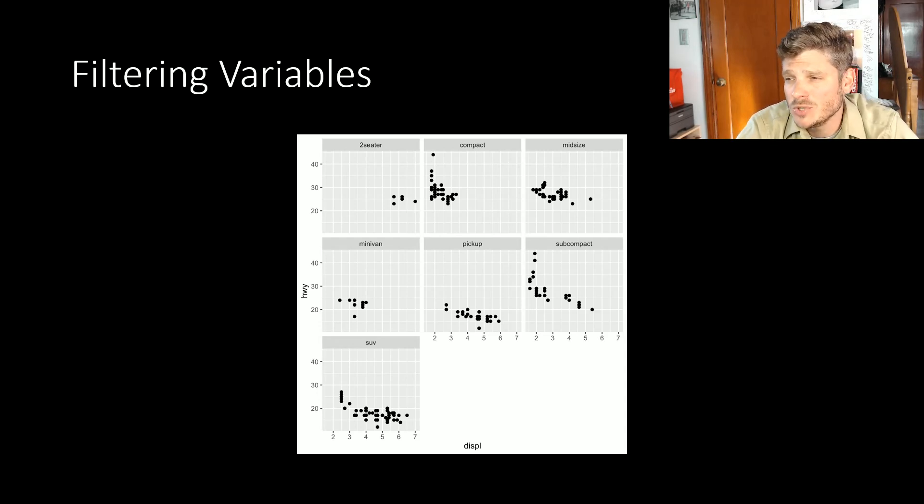When I run my code, now I have a separate graph for two-seater cars, compact cars, midsize cars, minivans, pickups, subcompact, and SUVs. Each one of these plots has that same x and y-axis. The y-axis is the highway miles per gallon—20, 30, 40. Along your horizontal axis is the displacement in liters—2 liters, 3 liter, 4 liter, and so on. You can clearly see all the different cars and it's not too confusing. You could pick one to start investigating more in depth. That lets us separate and filter for additional variables.